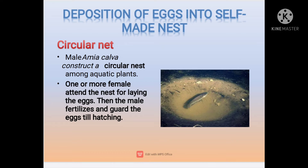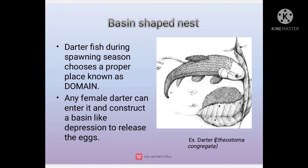The next pattern of parental care is the deposition of eggs into a self-made nest. The first is the circular nest — the male of Amia calva constructs a circular nest among aquatic plants, then one or more females attend that nest for laying eggs. The male fertilizes the eggs and guards them until they are hatched.